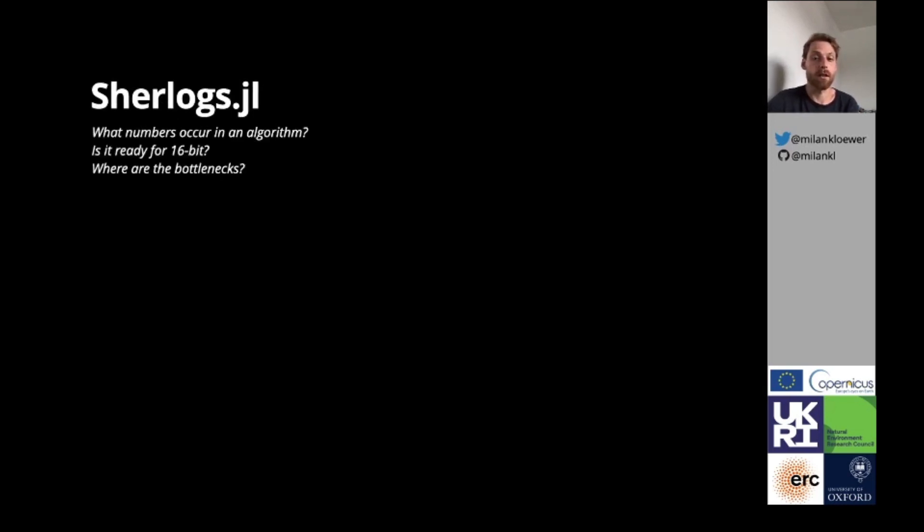So the questions I want to ask are: what numbers occur in an algorithm? Is the algorithm ready for 16-bit? And if not, where are the bottlenecks? This led to the development of the package Sherlocks, and I want to illustrate in the following slides a few examples.